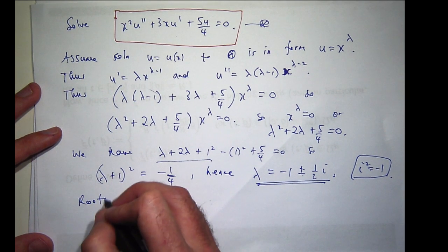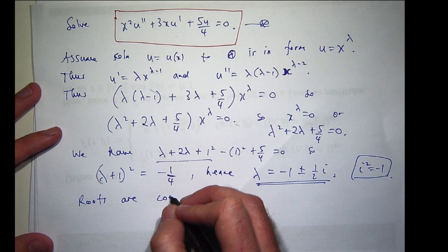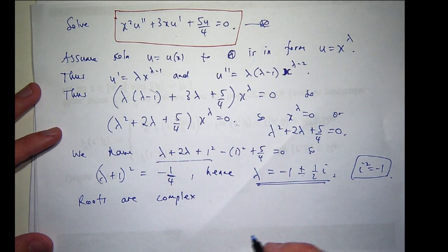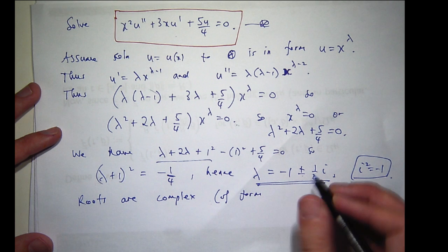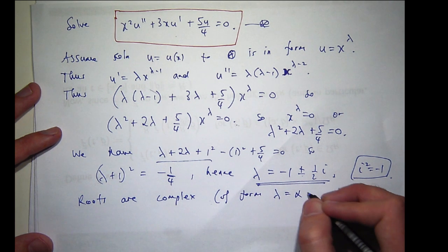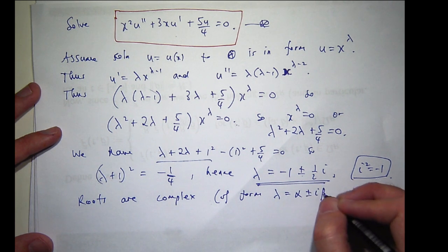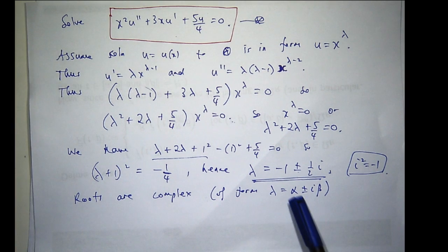So our roots are complex, which is an important thing to recognize. In fact, they're of the form α ± iβ, where α is a real number and β is some positive real number.